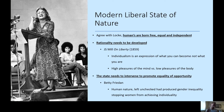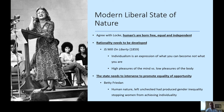Modern liberals argued that even though we are naturally rational, this rationality needs to be developed. This comes from J.S. Mill's On Liberty, published in 1859. Mill argued that individualism is an expression of what the individual can become, not what you are. Where classical liberals believed we already had individual capacity built within us, Mill argued that rationality needs to be developed — distinguishing between the high pleasures of the mind, like education, and the low pleasures of the body, like gluttony. Building off this, the state needs to intervene to promote equality of opportunity, focusing on what individuals can become rather than what they are.